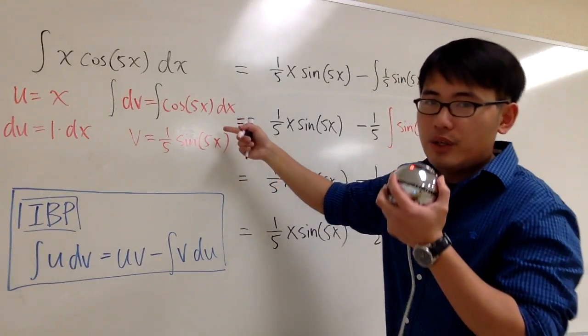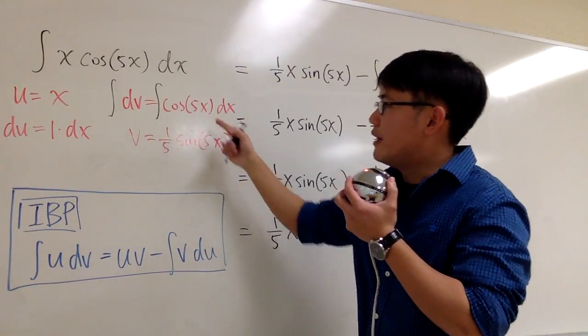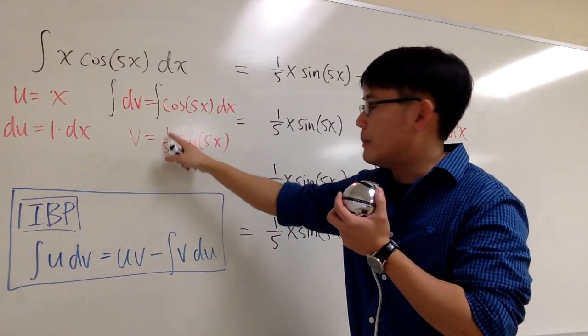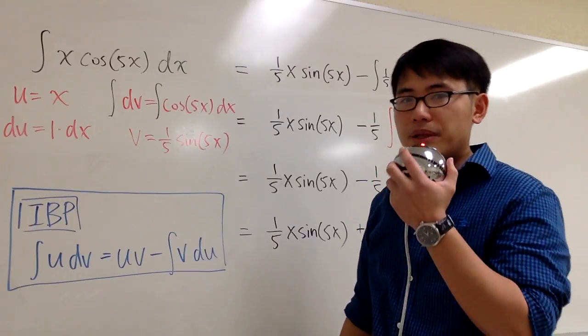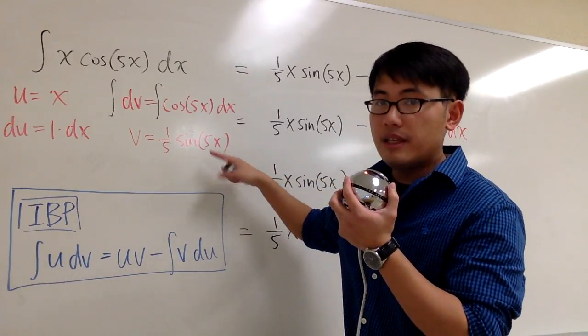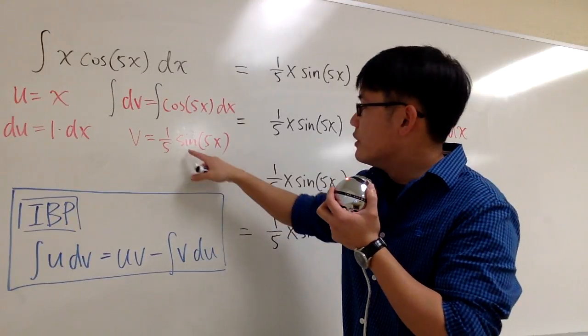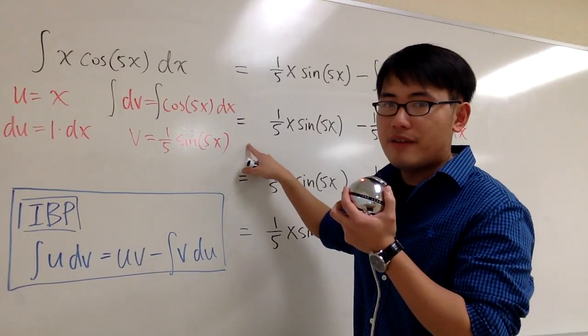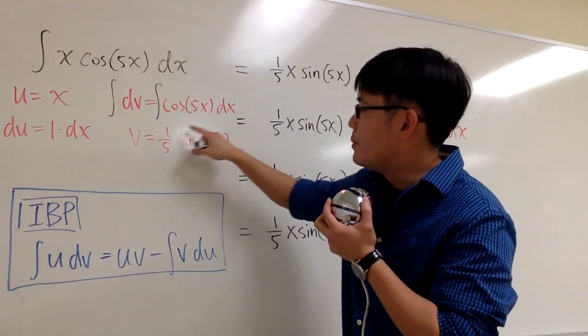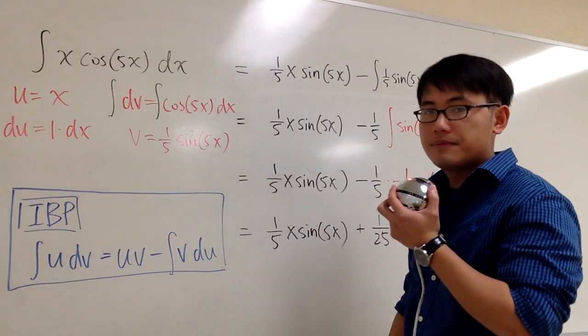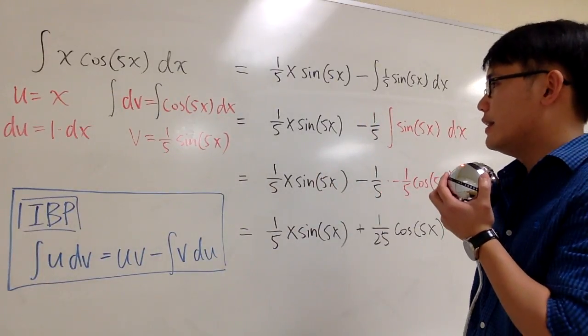This part, technically, we are doing the u substitution for cosine of 5x. You let u is equal to 5x, and then you will see we have to multiply by 1 fifth for this. But then, the way I like to do it is, just write down an answer right here, and then differentiate this real quick. The derivative of sine 5x will give you cosine 5x, but then you have to multiply by 5. That 5 will be cancelled out with 1 fifth, so you have just 1 for that. So, that's the integration part.